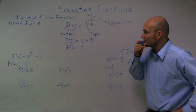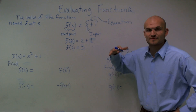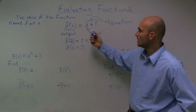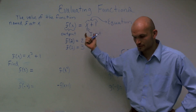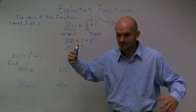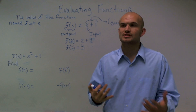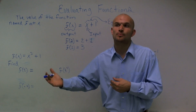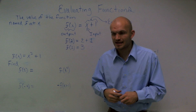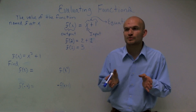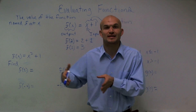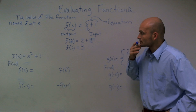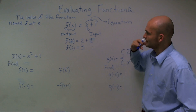Function notation is very much like an equation. We have one side of the equation equals the other side. When we're talking about functions, that's a certain type of relationship where we have an input and we have an output. And whatever our input is going to give us a unique output value. So that is our function relationship.